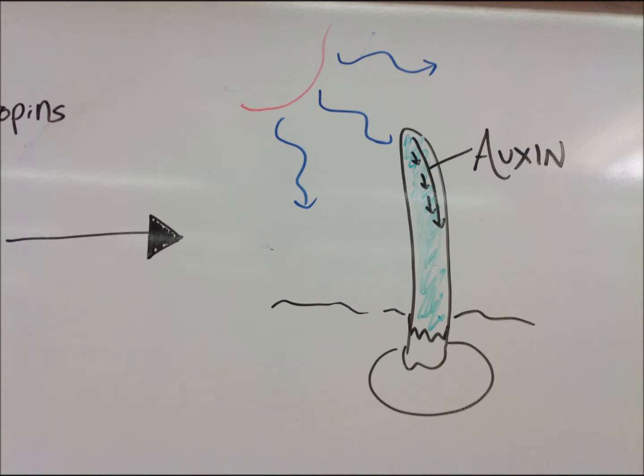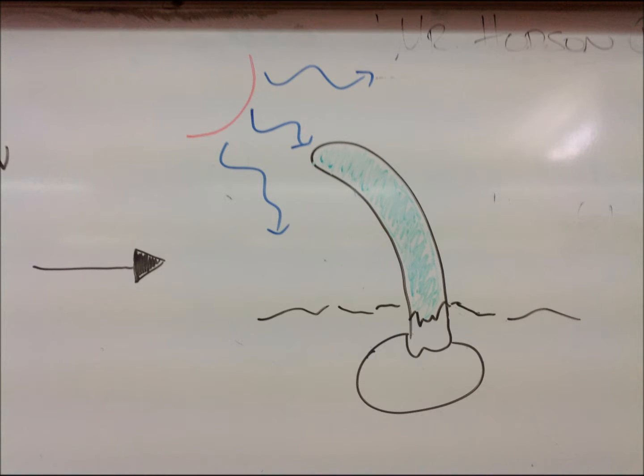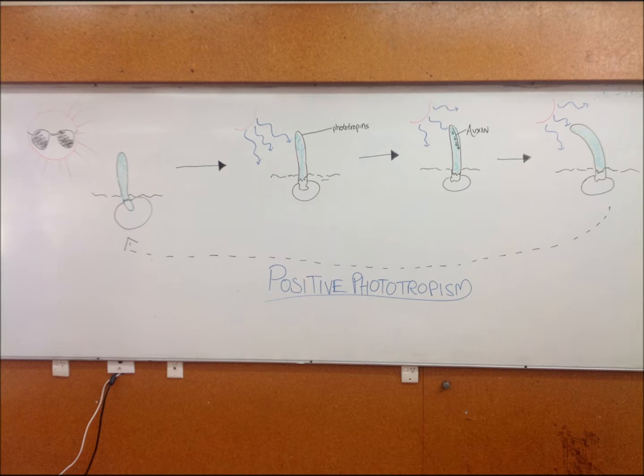These proteins cause the hormone auxin to collect on the side of the plant detecting less light. This stimulates elongation of the cells on the dark side of the plant, causing the shoot to bend towards the light. This is called positive phototropism.